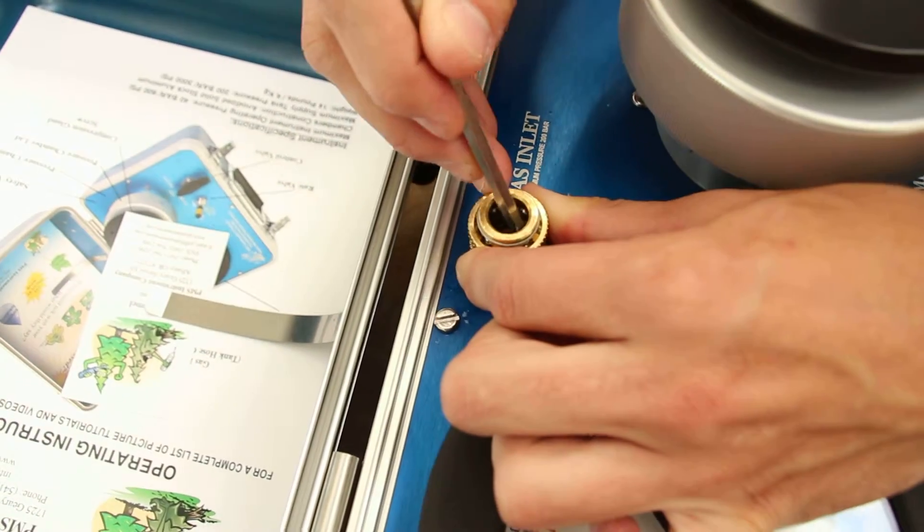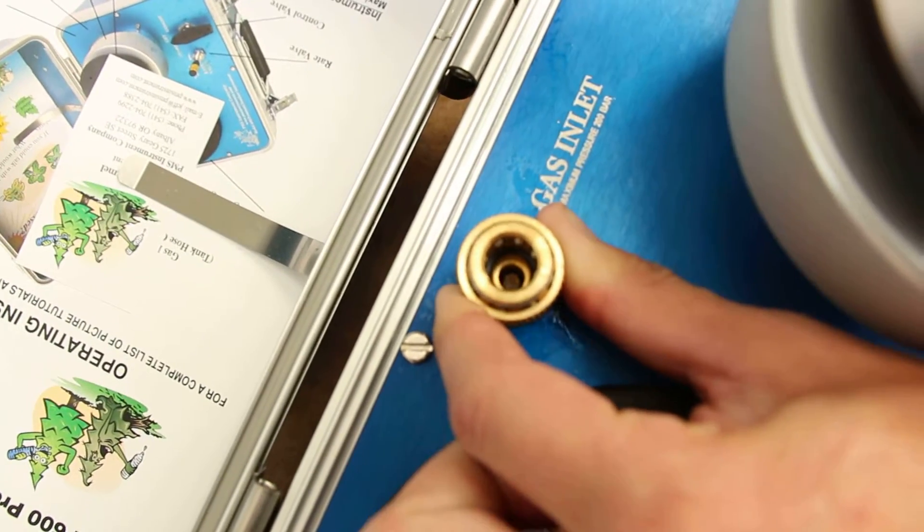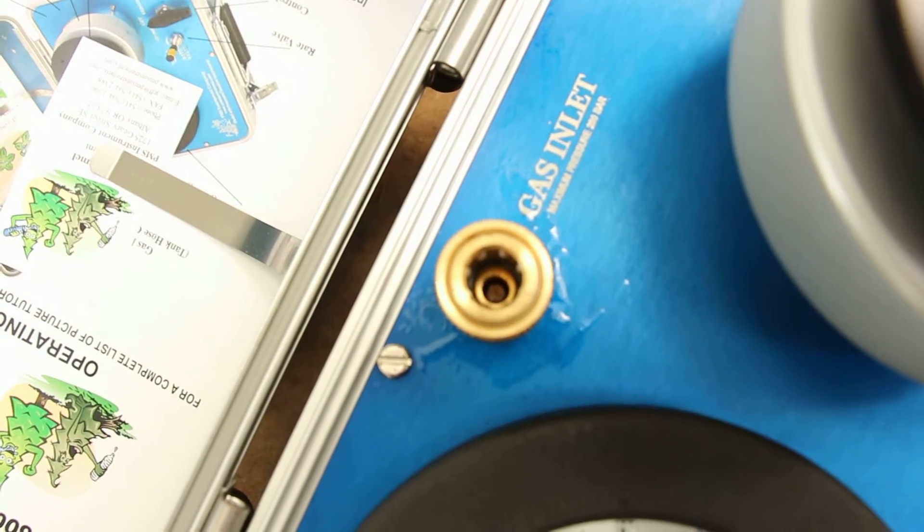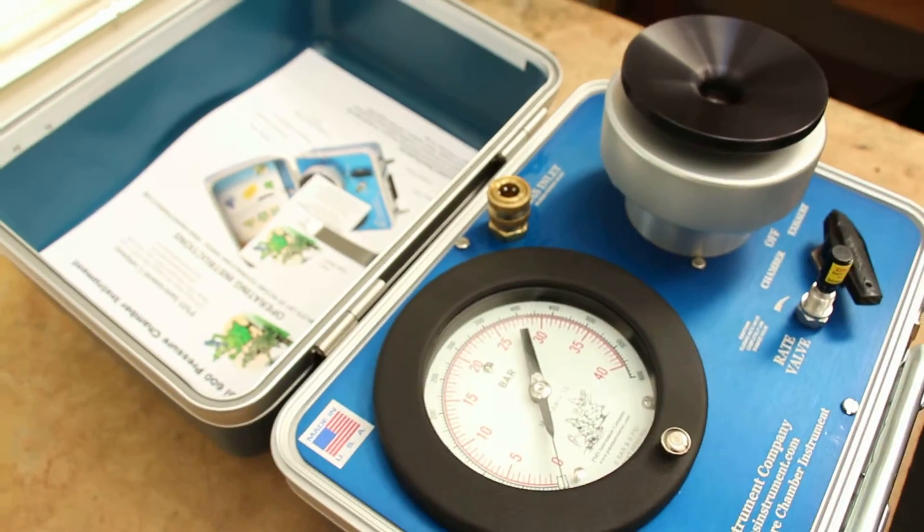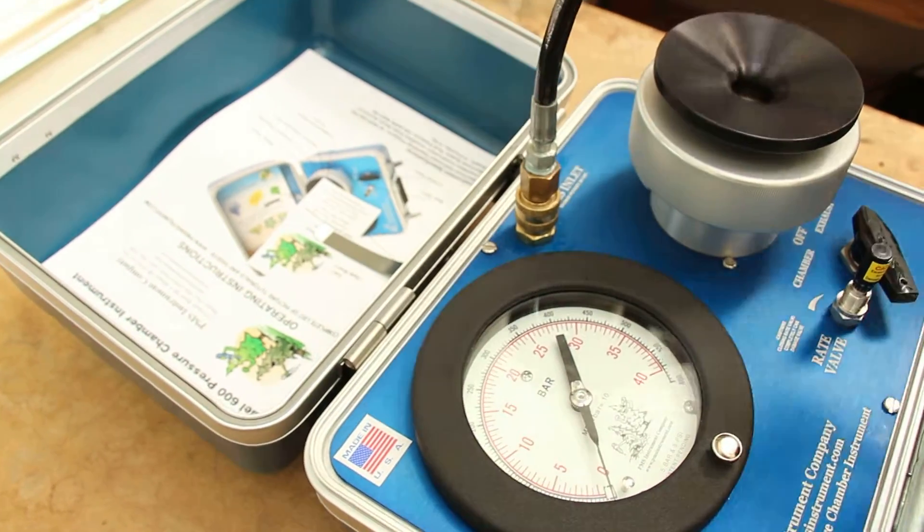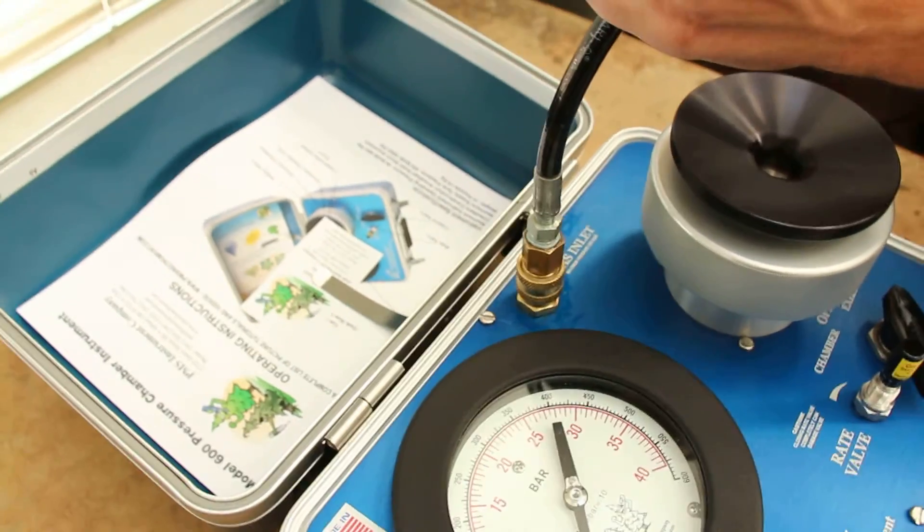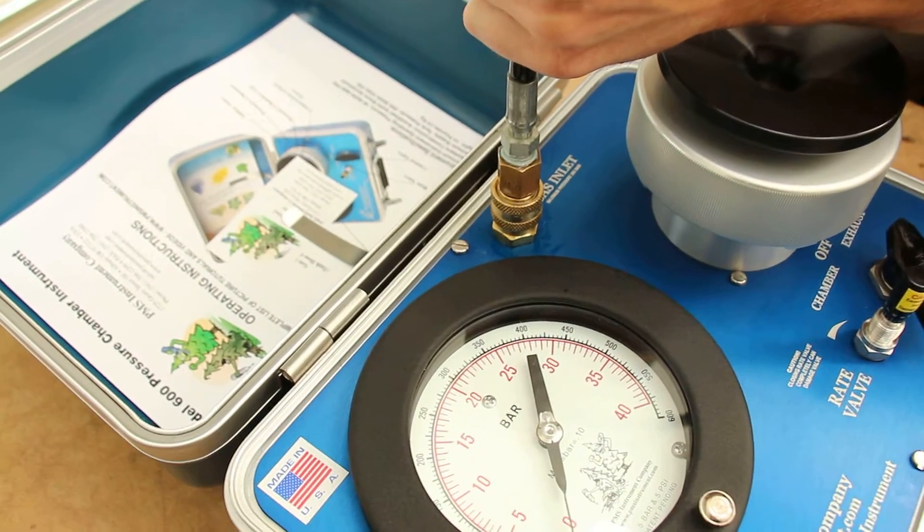So we're just going to slowly kind of work it around, and you'll know it's in there. It looks evenly placed right in there, and you can see, looking down this way, you can't even see the O-ring hardly at all. So then we're going to reconnect the instrument to that, make sure the muffler's turned off there, and then we'll pressurize it again.